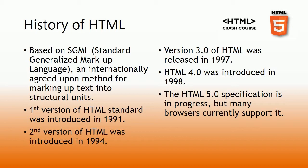HTML is based on SGML — Standard Generalized Markup Language — an internationally agreed upon method for marking up text into structural units. The first version of the HTML standard was introduced in 1991. The second version was introduced in 1994. The third version, called Wilbur, was introduced in 1997. The fourth version, called Cougar, was released in 1998.